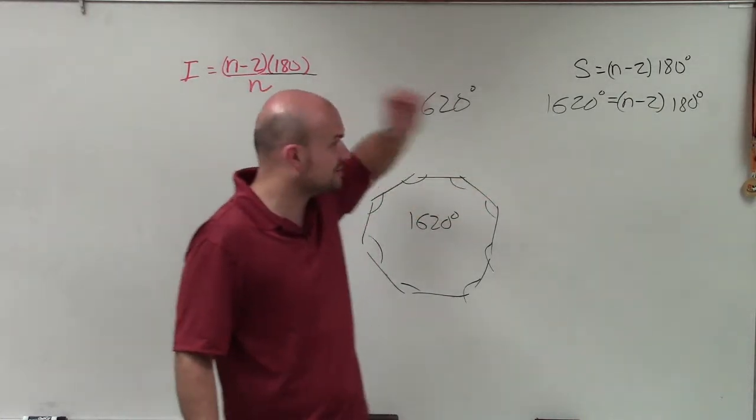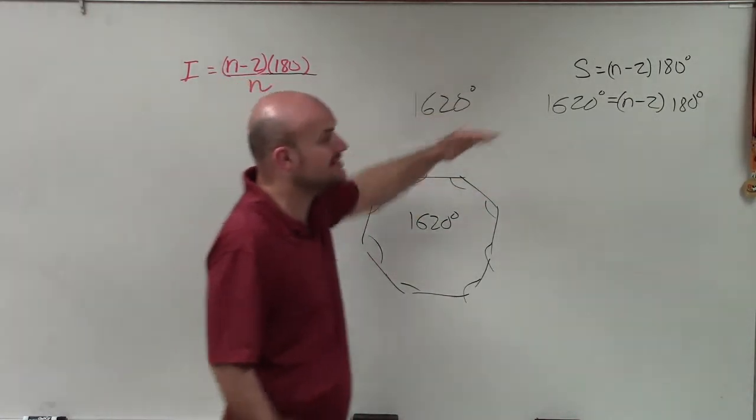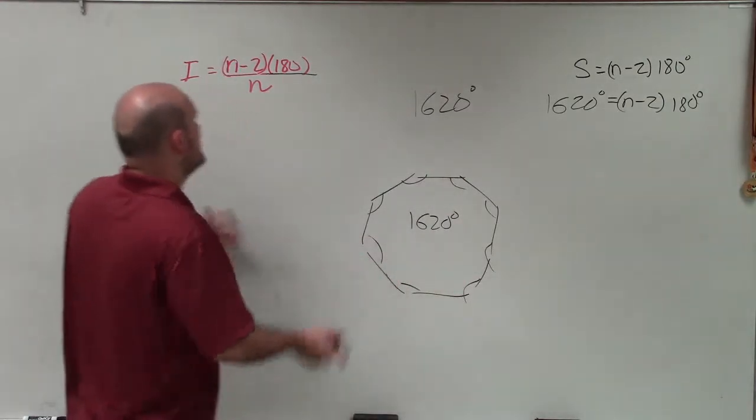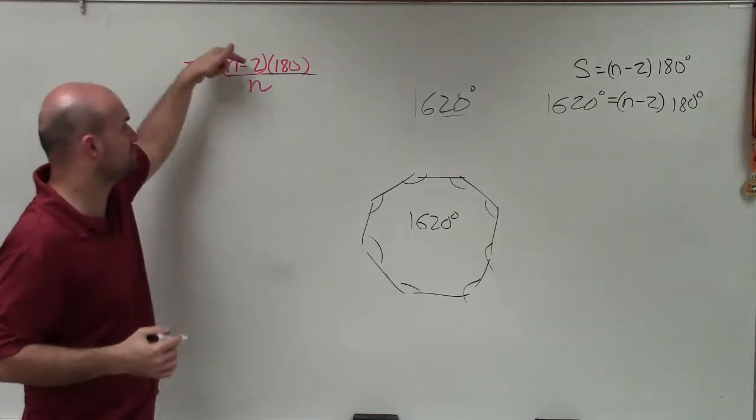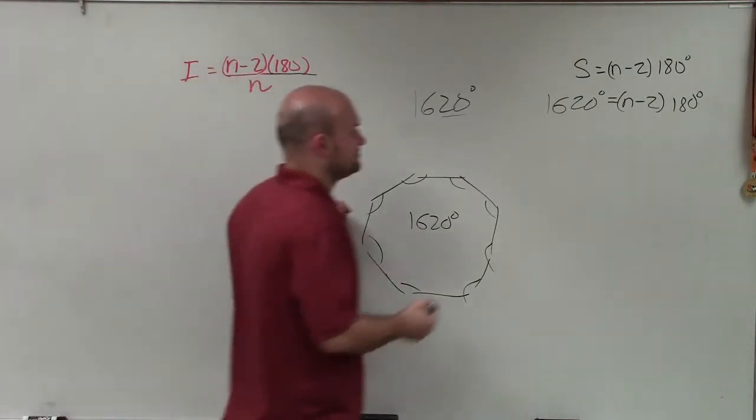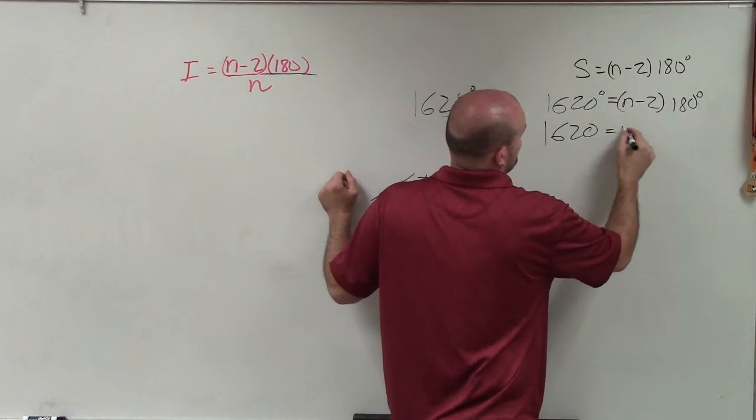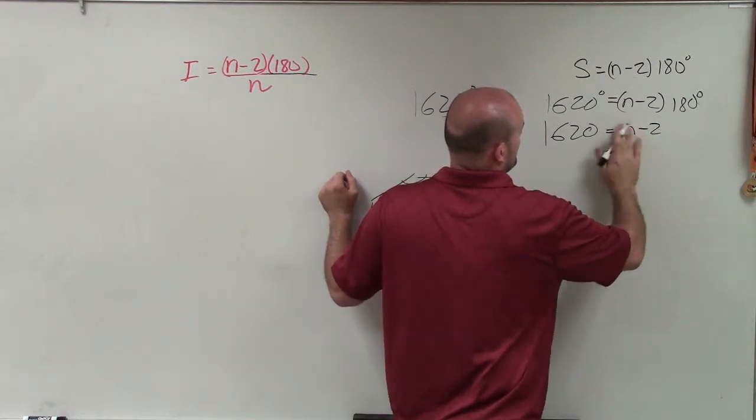So to do that, what I need to simply do is solve for n, which is going to tell me the number of sides, which I can then simply just divide my total sum by, which is really up here, divided by n.